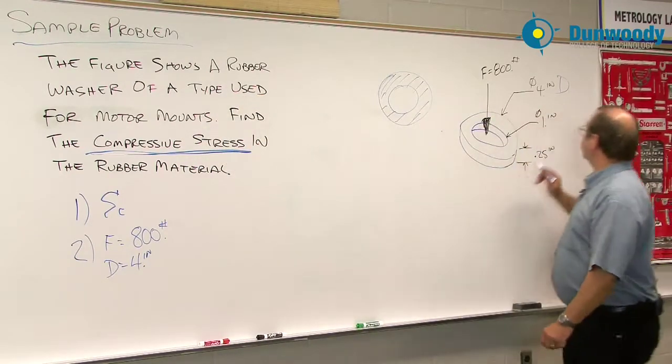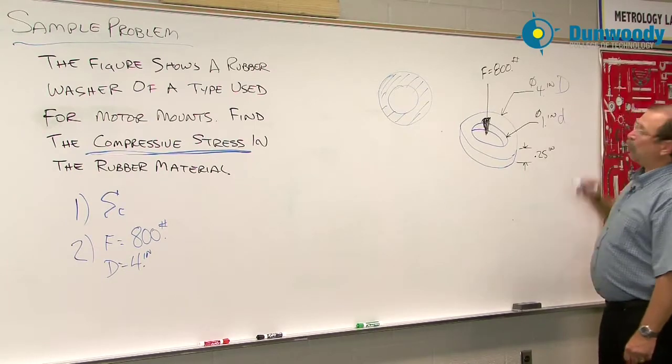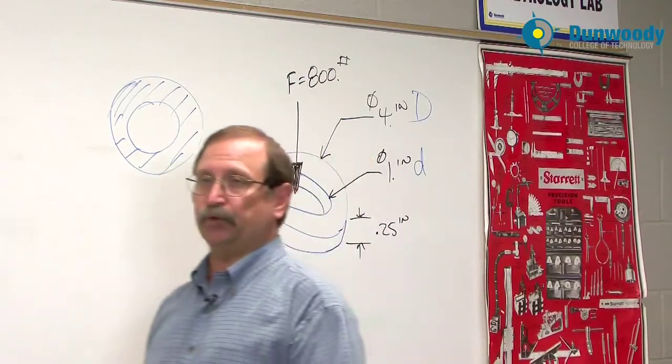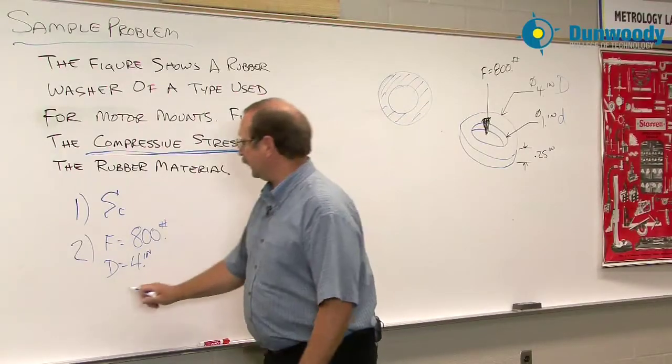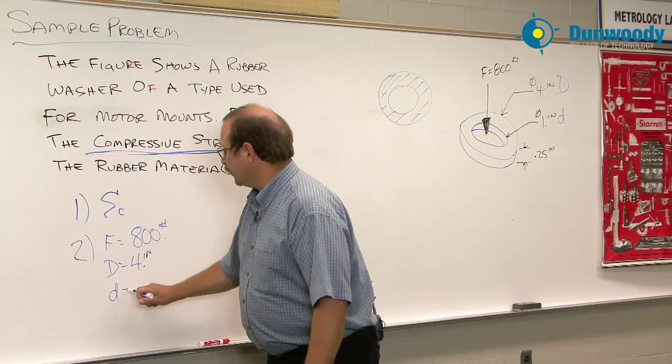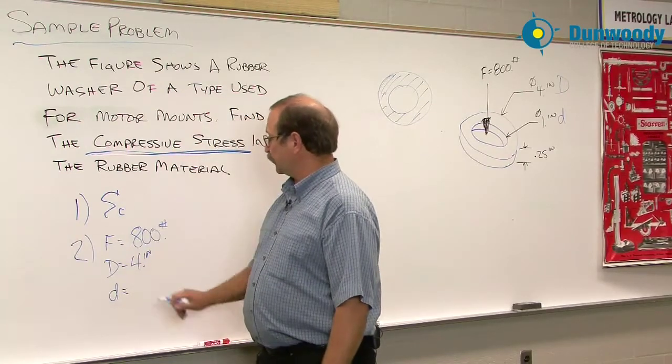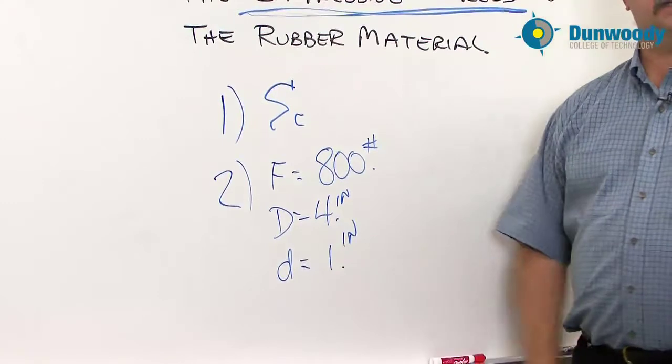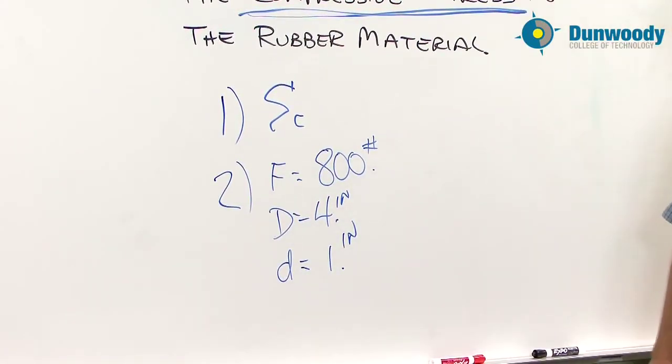The inside hole is going to be a small d. And that will be the inside diameter. Now some people use D sub O and D sub I. I have enough little subscripts that will go with the capital D outside diameter, small d on the inside diameter.